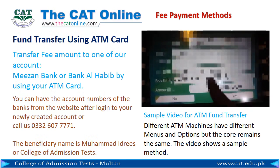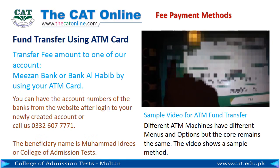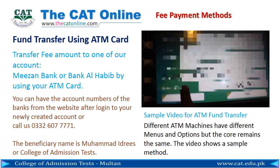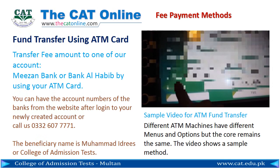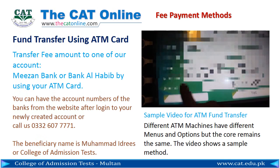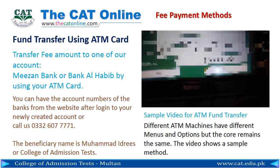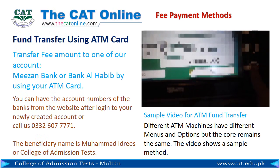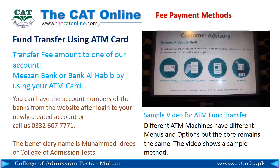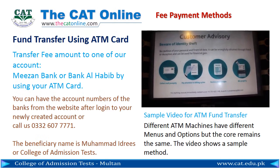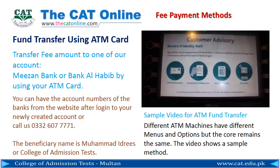A confirmation screen is displayed. Check the account number and the bank name of the CAT Online. The beneficiary name should be Mohammed, Idris, or College of Admission Tests. If the information is correct, press yes to confirm the transaction.